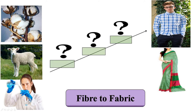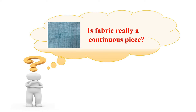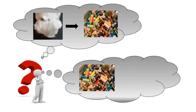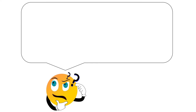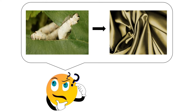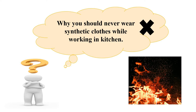Apart from this, we will try to answer some very interesting questions such as: Is fabric really a continuous piece? How does a lump of cotton get converted into threads? How do these threads ultimately become fabric? How does a tiny creature — the silkworm — give us the very expensive and royal silk fabric, by killing itself? Yes, it gets killed in the process. And why you should never wear synthetic clothes while working in the kitchen.